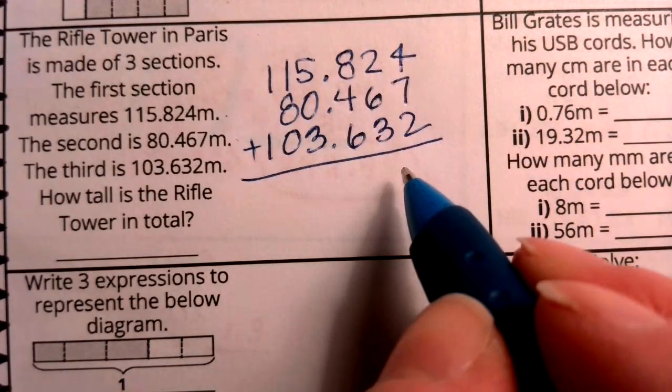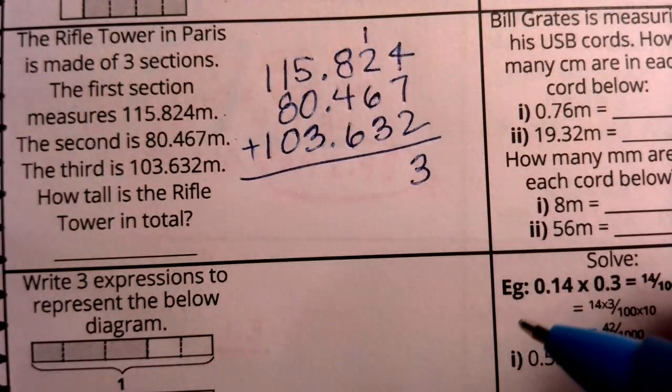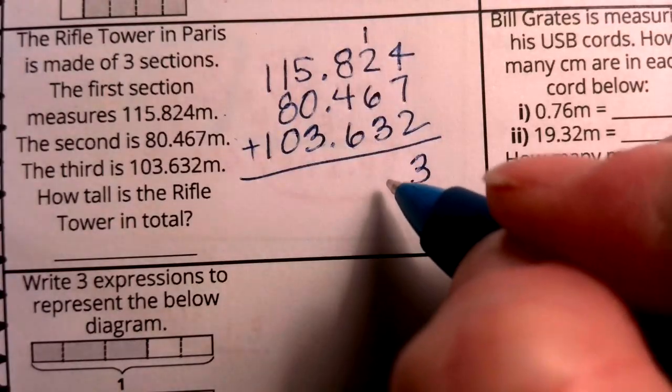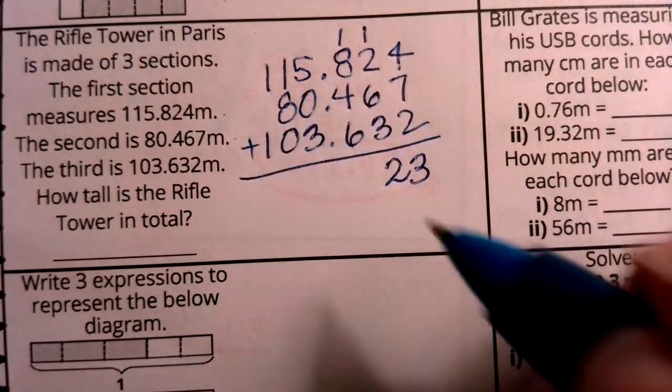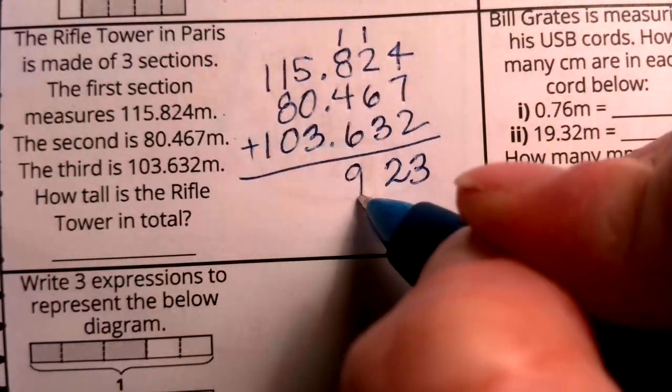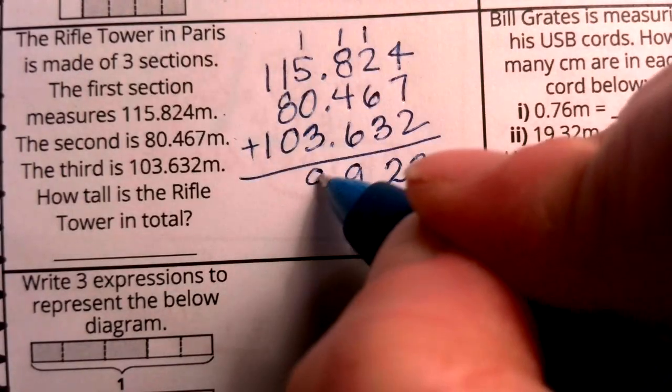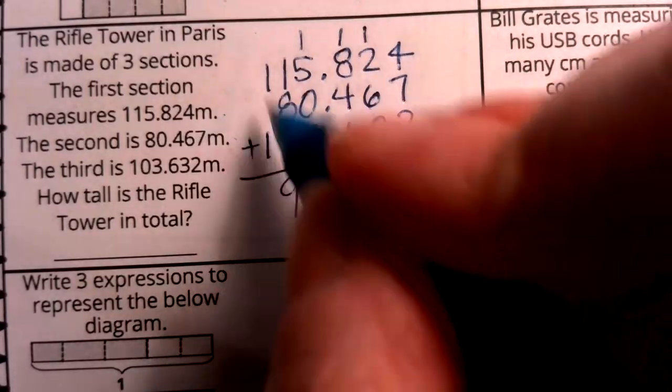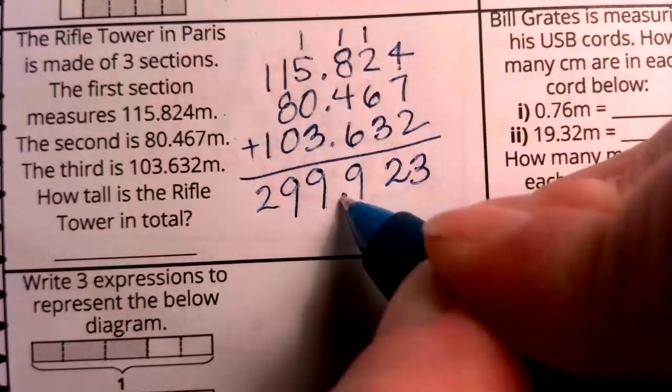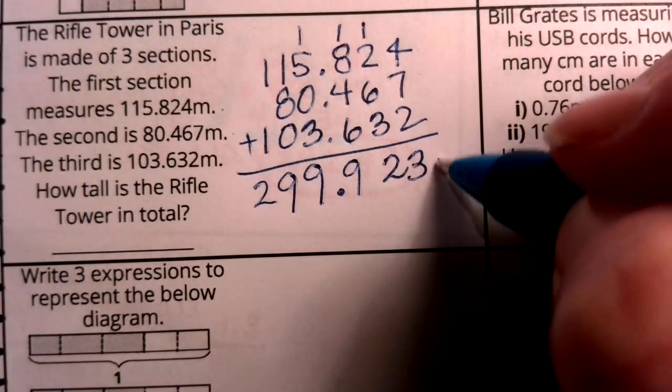So if I add these hundredths, I'm going to have 13, carry my 1. Now if I add these, I'm going to have 12, carry my 1. If I add these, I'm going to have 19, carry my 1. If I add these, I'm going to have 9. If I add these, I'm going to have 9. And if I add these, I'm going to have 2. That is the answer in total. But what is the unit? It's a meter.